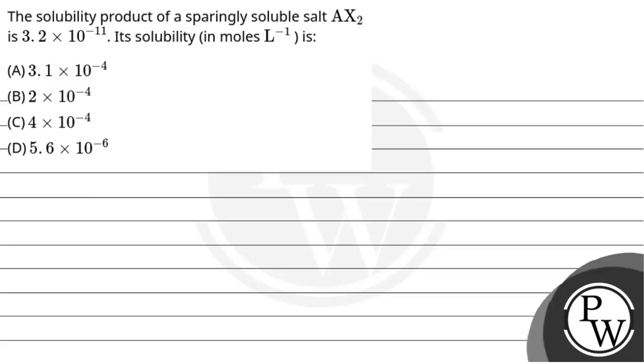Hello, let's read the question. The solubility product of a sparingly soluble salt AX₂ is 3.2 × 10⁻¹¹. Its solubility in moles per liter is - we are given four options and have to select the correct option among these.